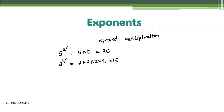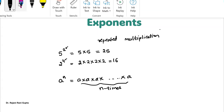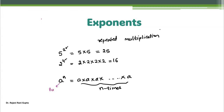This is how we express exponents. But if you want to express it in a generalized form, we say a power n. A power n means a is multiplied n times — n times in number.